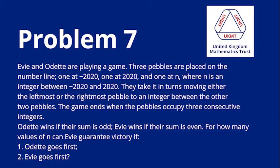Problem seven. Evie and Odette are playing a game. Three pebbles are placed on the number line, one at negative 2020, one at 2020, and one at n,